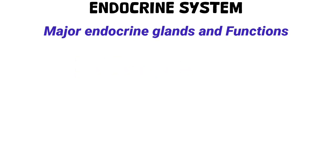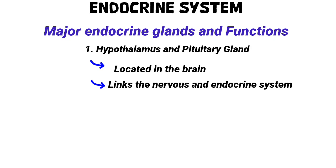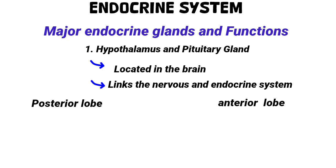Major endocrine glands and their functions. Number one: the hypothalamus and the pituitary gland. The hypothalamus, located in the brain, links the nervous system and the endocrine system. It regulates the pituitary gland, often called the master gland, because it controls other endocrine glands. The pituitary gland is divided into the posterior lobe and the anterior lobe.